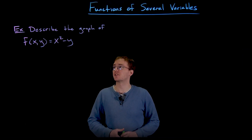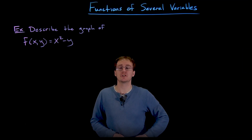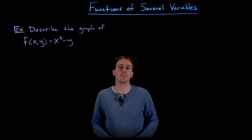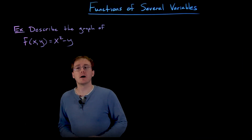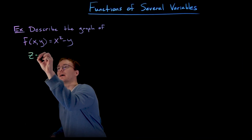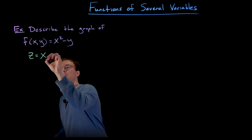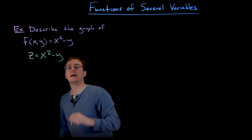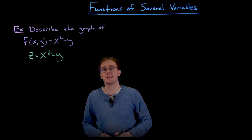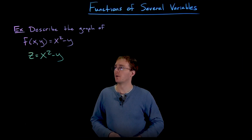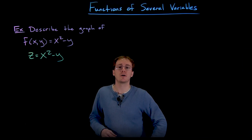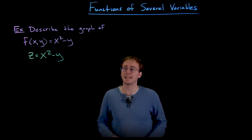In this next example we're asked to describe the graph of the two-variable function f(x,y) equal to x squared minus y. It can sometimes be helpful to rewrite this as z equals x squared minus y and hope we can recognize it as a quadric surface, a plane, or a cylinder. However, we don't immediately recognize what this function is from our list of common functions, so we'll treat it as a totally new function.